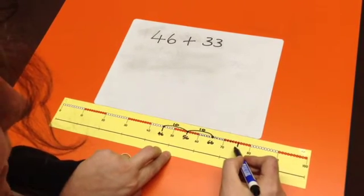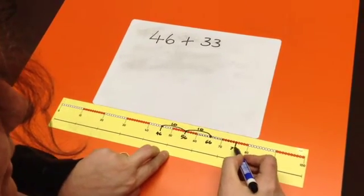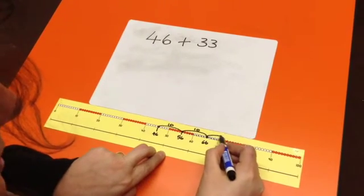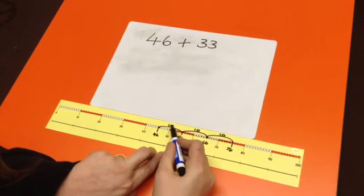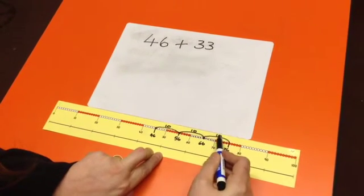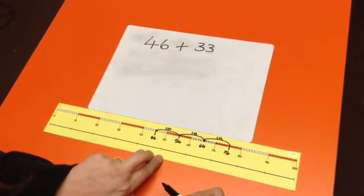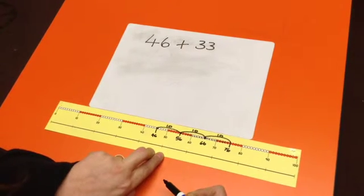Therefore, jumping another ten. We've now jumped 10, 20, 30, and so the 30 part of 33 is done. All that remains is to count three more units on from 76.